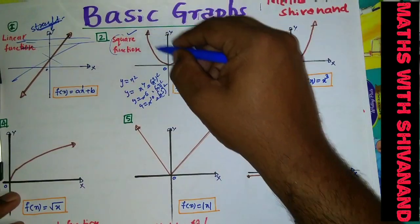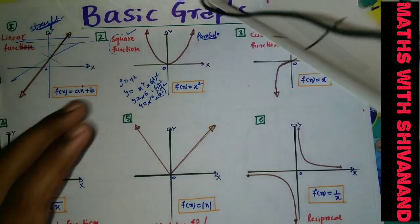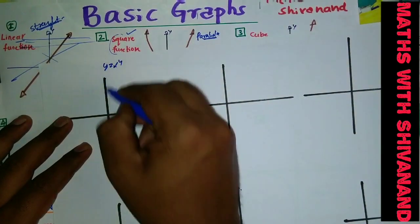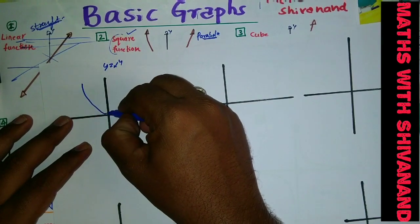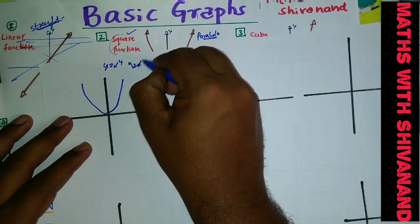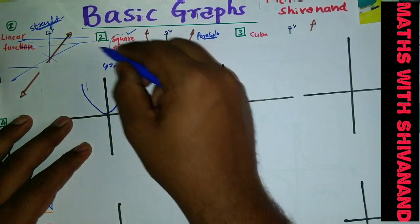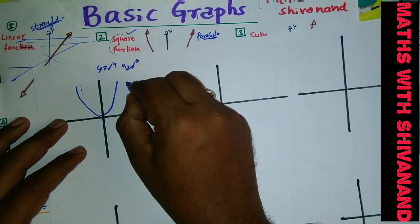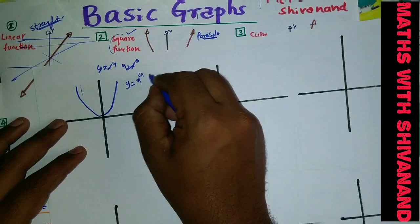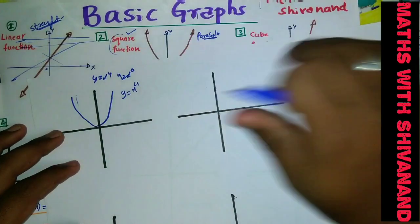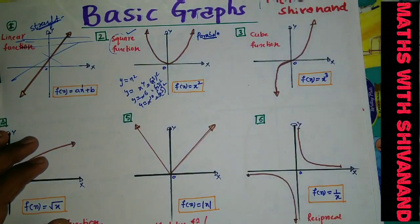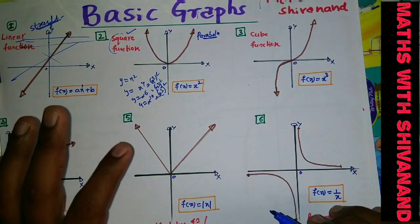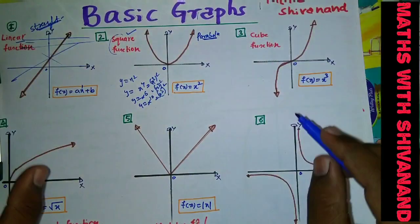So x⁴ is also of the parabolic shape. If somebody asks you to draw y = x⁴ or y = x⁶, it is the parabolic shape only. x¹⁰, x¹¹, x¹² — y = x to the power of 2n is always this parabolic shape. Remember: where n belongs to a positive integer, all such square functions are of the parabolic shape.